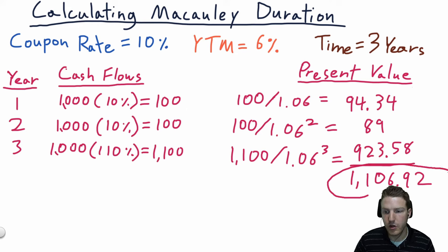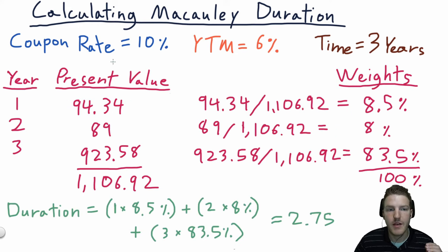Now that we have our present values, we need to find the weights of each present value. So we have our total present value of 1,106.92. Now we'll just take each year's present value and divide it by the total to get the percentage weight of that year's value and the total present value. So for the first year, you can see the 94.34 divided by 1,106.92 is 8.5%. Now we do the same thing for year two and year three. If we sum all of these weights up, we find the total to be 100%.